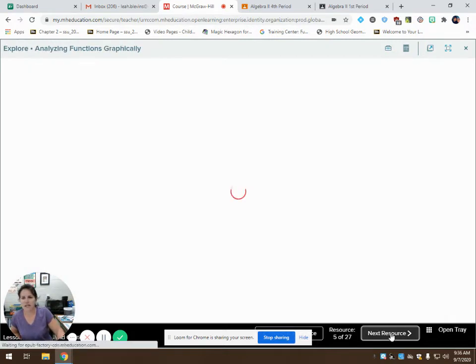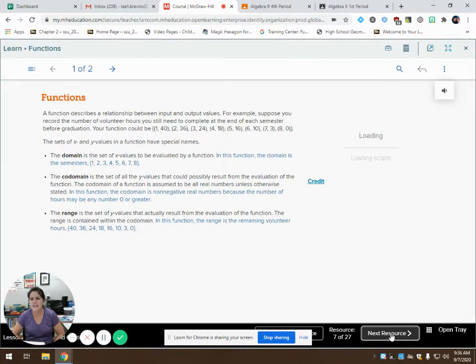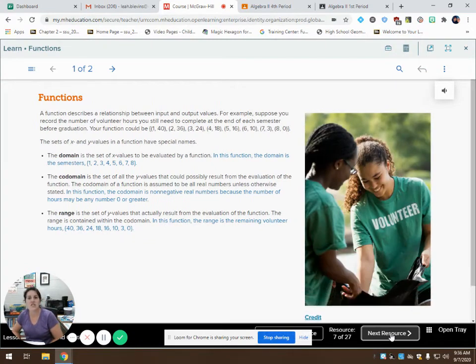So let's look at a few examples. Let's look at functions. What is a function? A function describes the relationship between input and output values. It helps input and output. It's the same thing as the domain and the range. So it describes the relationship between my x values and my y values. For example, suppose that you record the number of volunteer hours that you still need to complete at the end of each semester before graduation.